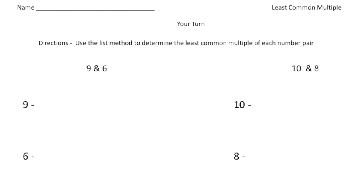Welcome back. Let's see what I do with these practice problems. So you had to use the list method to find the least common multiple of these number pairs. So here we have 9 and 6 and 10 and 8. So let's list the first few multiples of 9. So 9 times 1 is 9. 9 times 2 is 18. 9 times 3 is 27. 9 times 4 is 36. And 9 times 5 is 45.